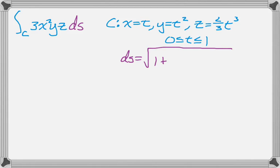Plus y prime, which is 2t squared, so 2t and we're going to square that. And then z prime is 2t squared, and we have to square that. So we end up with this.